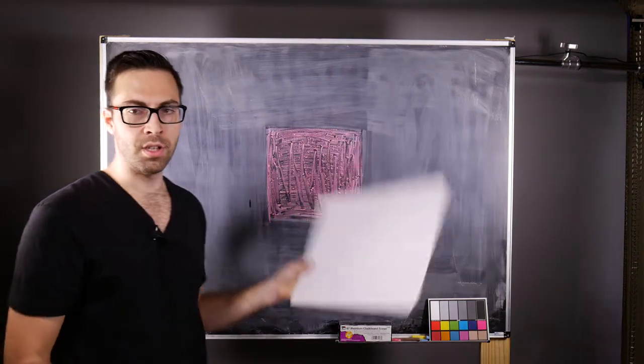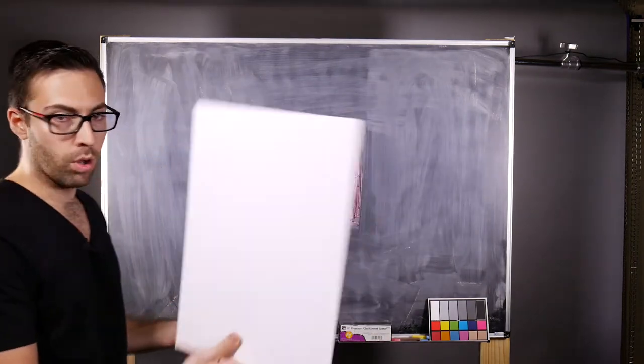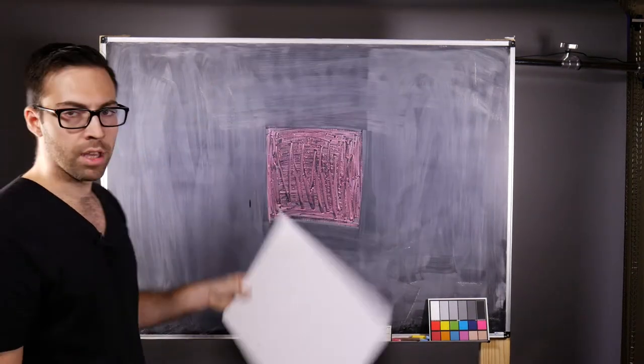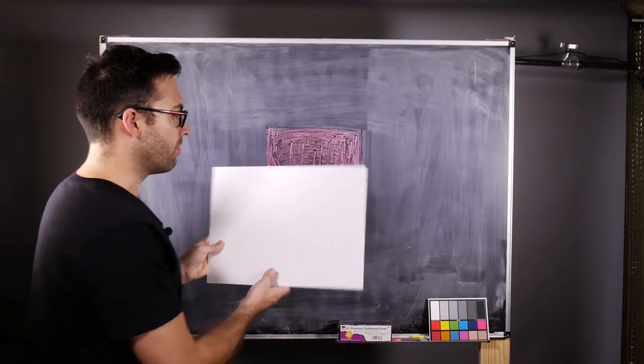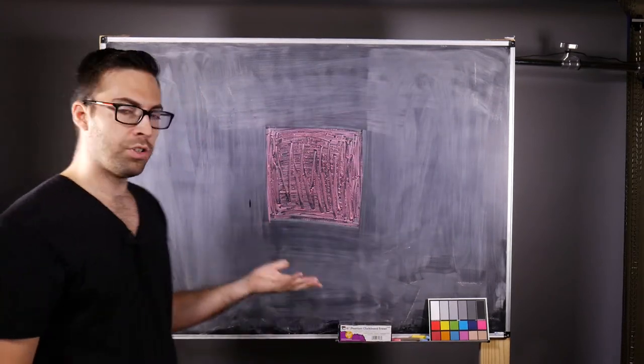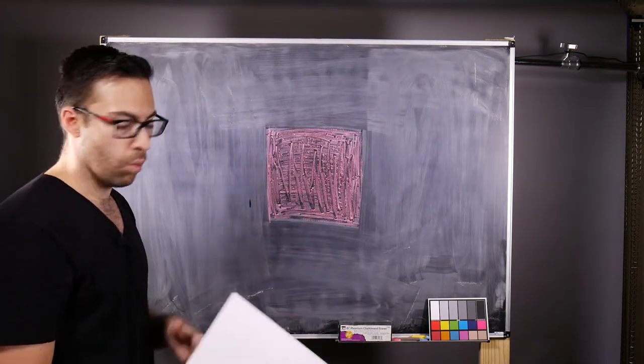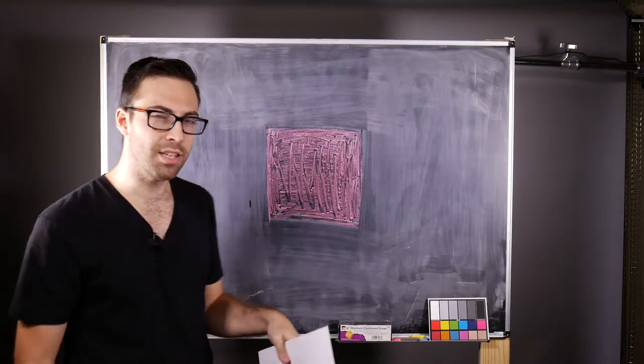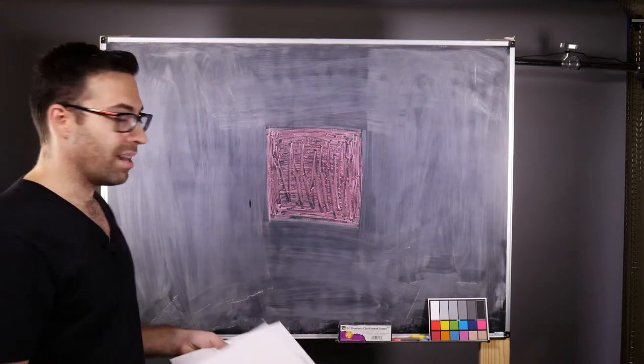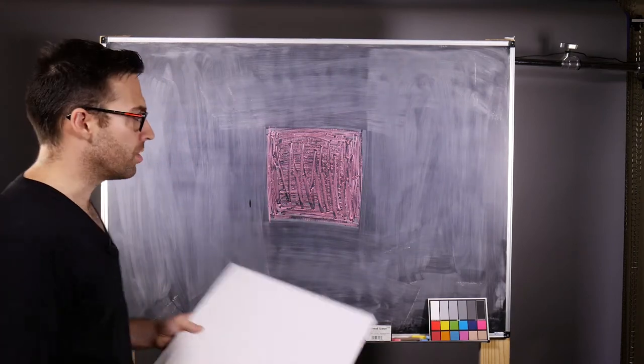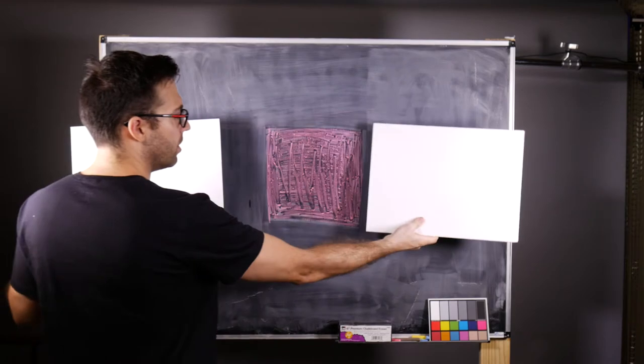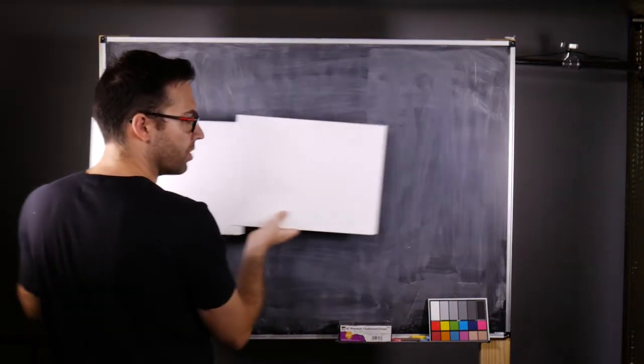So this part of the image would be exposed longer than this part of the image if the curtain was moving this way. Now, this wasn't a huge problem and early shutters just had one curtain and they would drop down like a guillotine or there would be different variations of a single curtain shutter because exposure times were very long, you know, tens of seconds. And that fraction of a second wasn't going to make a difference.